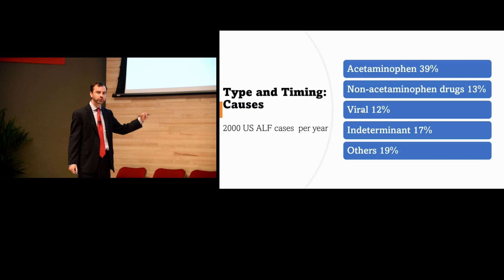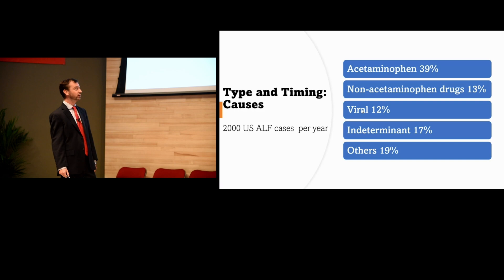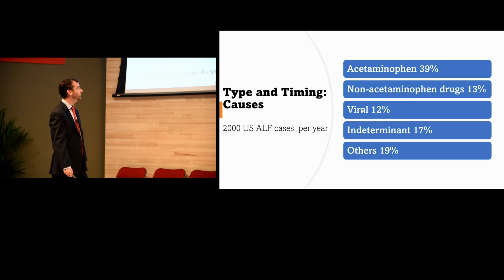There are around 2,000 cases of acute liver failure per year in the U.S. The biggest cause is acetaminophen at 39%, followed by non-acetaminophen drug-induced liver injuries at 13%, so drugs are one of the first things you'll think of. Viral causes account for about 12%, indeterminate causes about 17%, with other rarer causes as well.